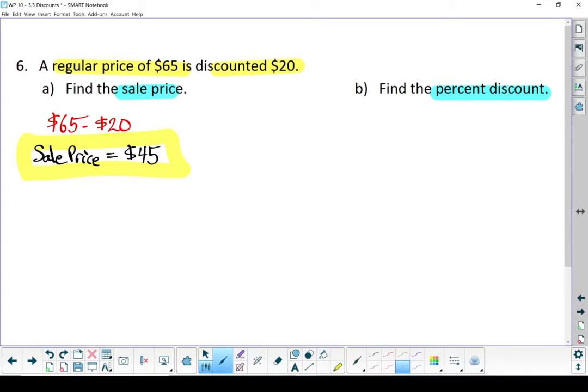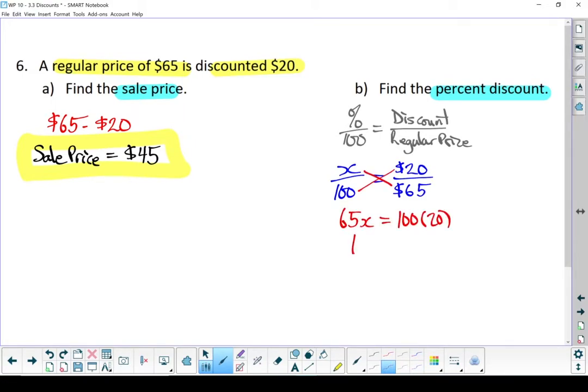So how much did I save? Well, start with the formula. Let's put in what we know. I don't know the percent discount. I put an X in there. And then I get to cross multiply. My discount was 30.8%.